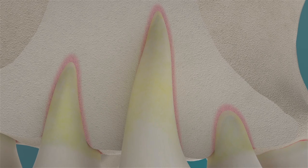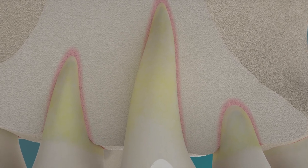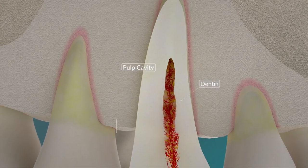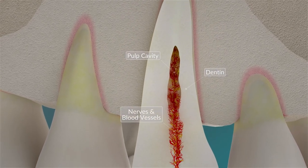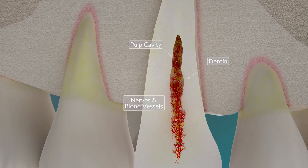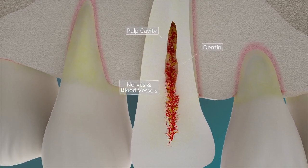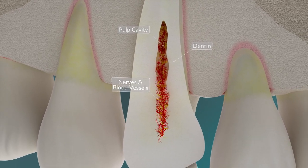Nerve tracts and blood vessels, which supply the tooth with nutrients, are located in the pulp cavity. Dentin surrounds the pulp cavity.